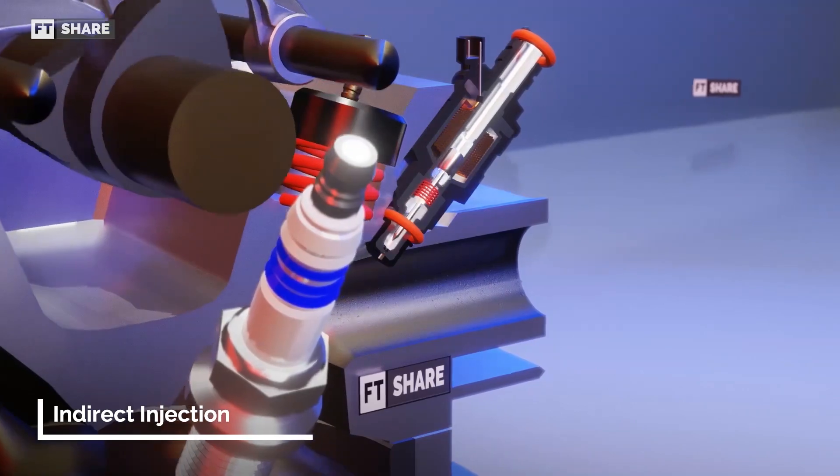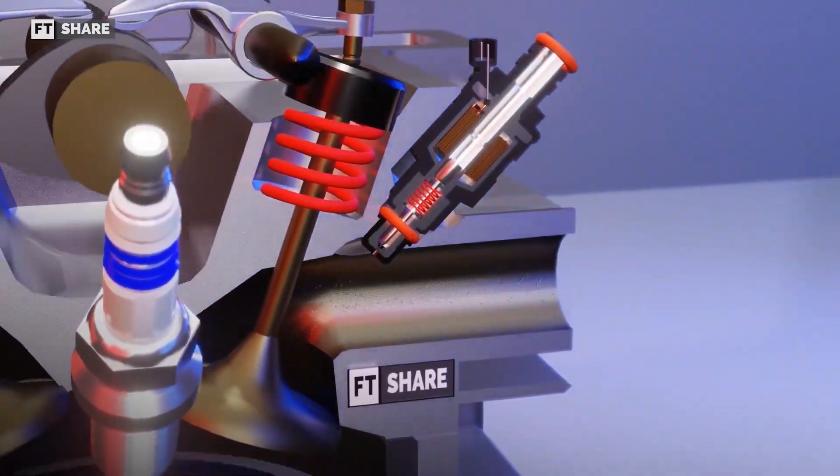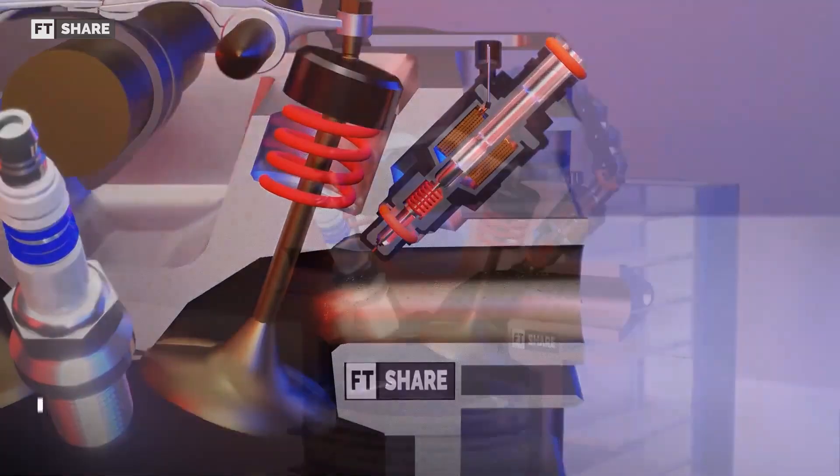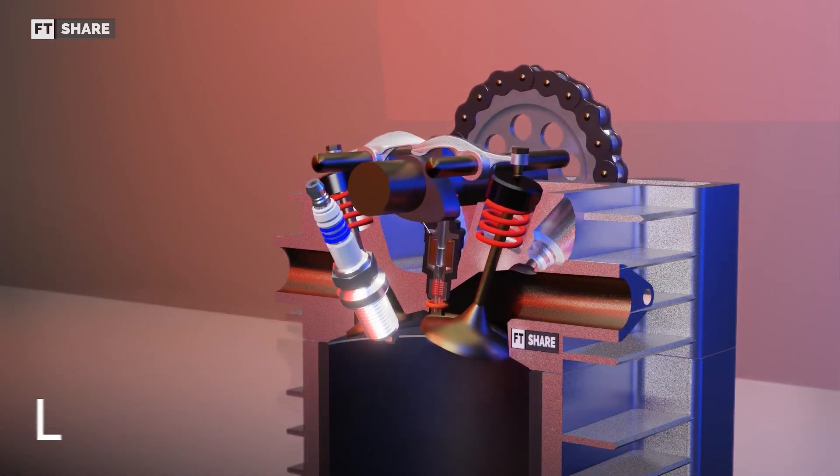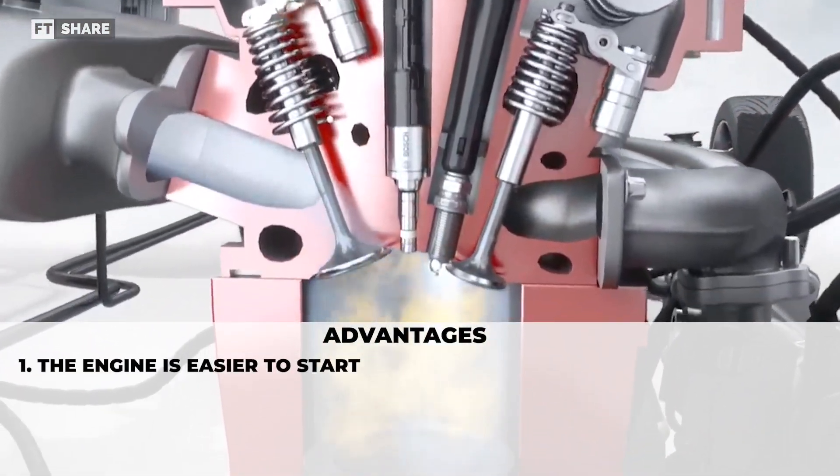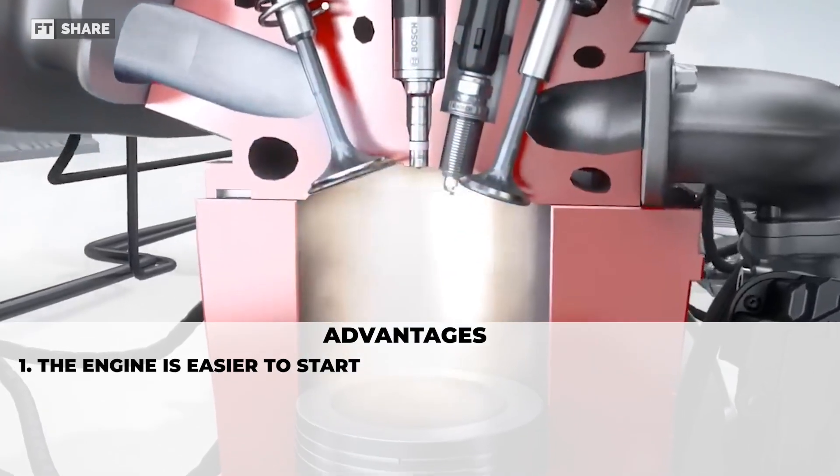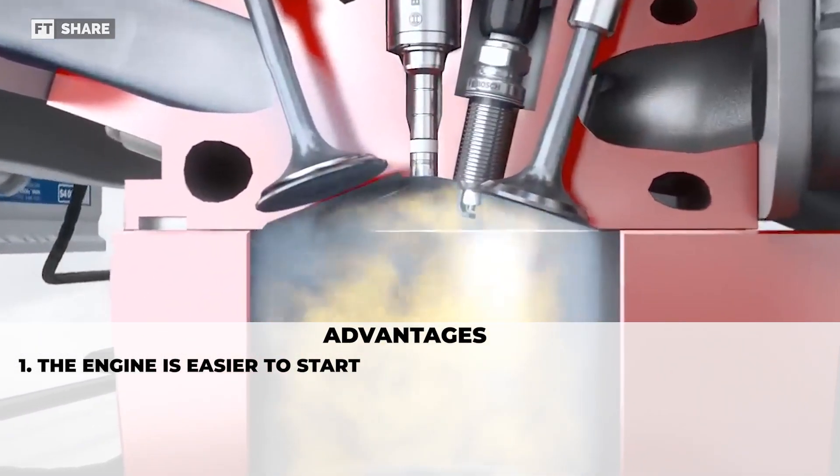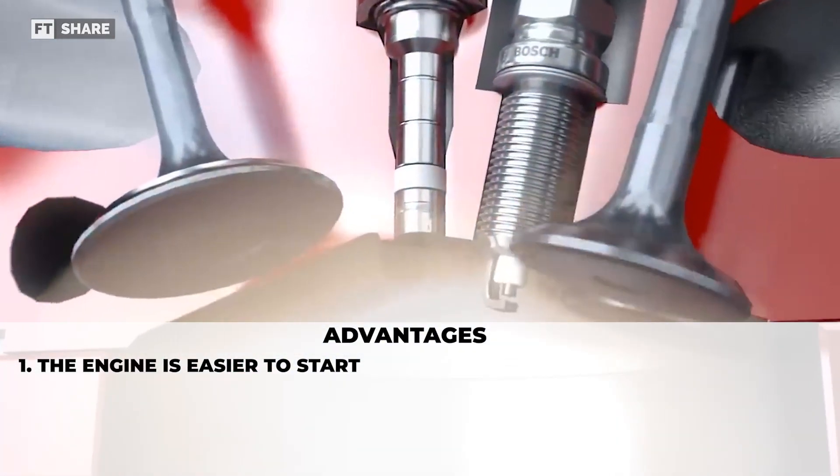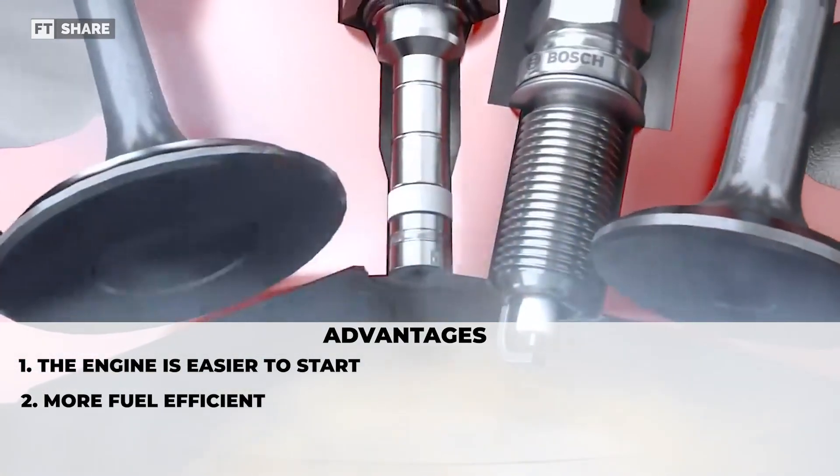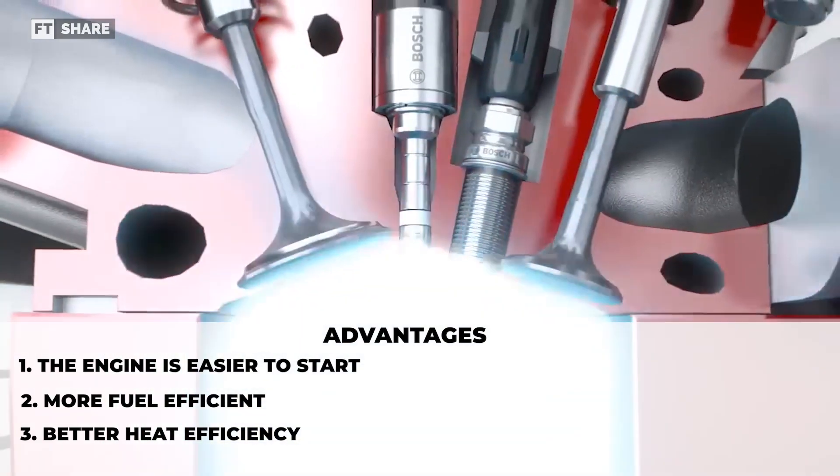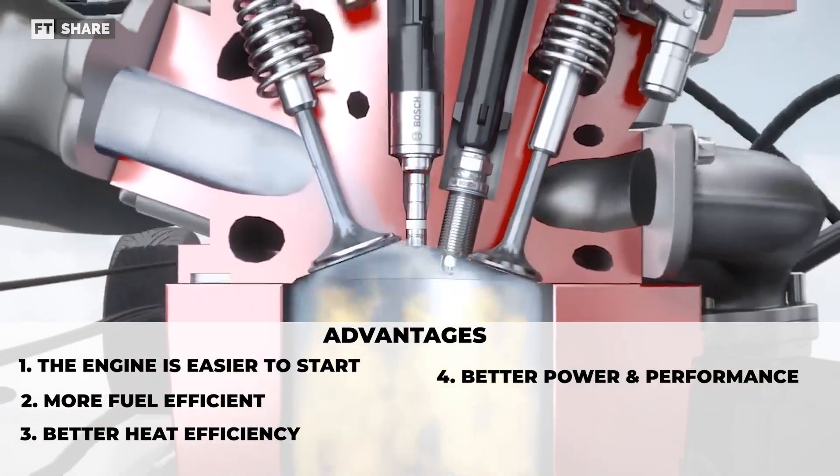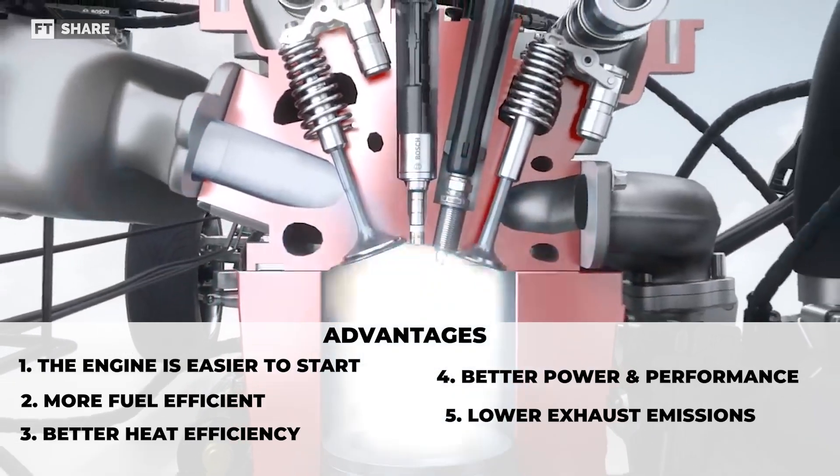Now that we've discussed how this injection system works, it's time to look at the limitations and advantages of direct and indirect injection. Let's discuss direct injection first, starting with its advantages. First, when the engine is cold, the engine is easier to start because the position of the spark plug is closer to the fuel source. Second advantage, more efficient use of fuel. Then smaller combustion chamber, which can make heat efficiency better. Next, better power and performance. And finally, lower exhaust emissions.